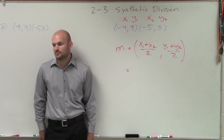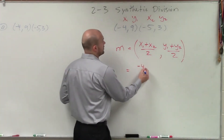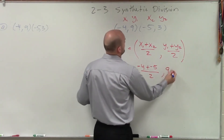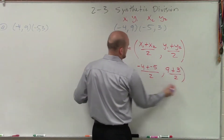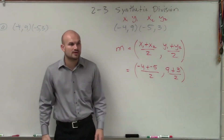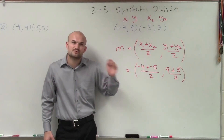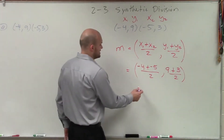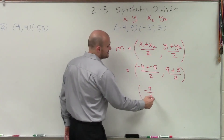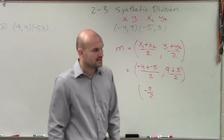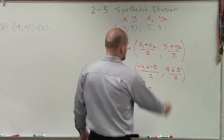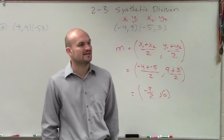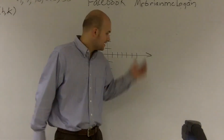So in this case x1 is negative 4, plus x2 which is negative 5, divided by 2, comma, y1 which is 9, plus y2 which is 3, divided by 2. Simplifying: negative 4 plus negative 5 is negative 9, divided by 2 — leave it as negative nine-halves rather than converting to decimal negative 4.5. Then 9 plus 3 is 12, divided by 2 is 6. Therefore the midpoint between those two points is negative nine-halves, comma 6.